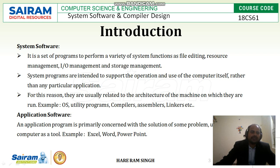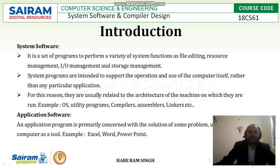For example, we can see that the operating system is one kind of system software which is responsible for file editing, resource management, input-output management, and storage management. Another definition of system software is: system programs are intended to support the operation and use of the computer itself rather than any particular application. It is a set of programs which supports the operation of computers and makes the computer work smoothly. For this reason, they are usually related to the architecture of the machine on which they are run.